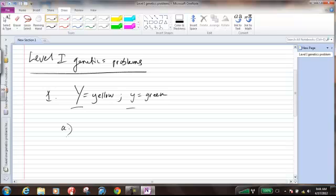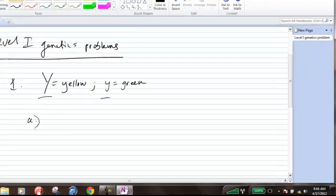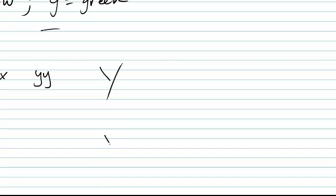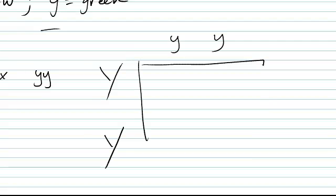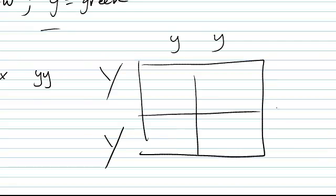When I work through problem 1a, it asks what will be the colors of the offspring of a homozygous yellow crossed with homozygous green. Let's write down the parent alleles first. Homozygous yellow looks like this, and this must be homozygous green. We can do the Punnett square. Gamete possibilities for one parent on the side, gamete possibilities for the other parent across the top.